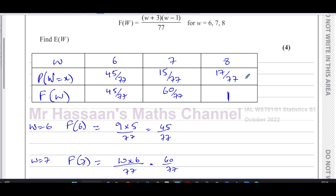And that will give you the total. So that's going to be 60 plus 17, that's 77 over 77. So we have the probability distribution now. That's what we're going to use to work out E(W).